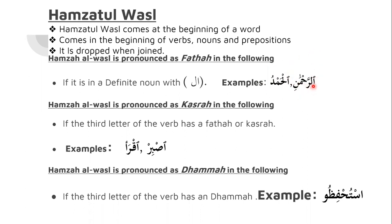Laam Shamsiya basically means that we drop the Laam and pronounce the Hamzatul Wasal with the third letter, and you will have a Shaddah to indicate that you now have to join. In the second case, what we have is a Laam and a Hamzatul Wasal, and we will put a Fathah on there, and we will say Alhamdu and Al-Rahman. So we are dropping the Laam in Shamsiya, and we are pronouncing the Laam in Qumariya.